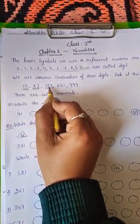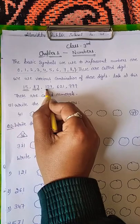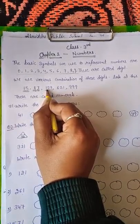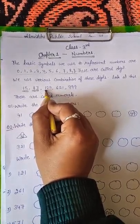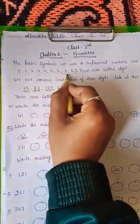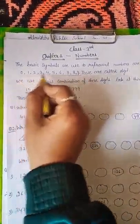129. This is also a numeral. And this is a combination of three digits. That is 1, 2, 9. So every numeral is a combination of digits. And we have 10 digits in our numbers.